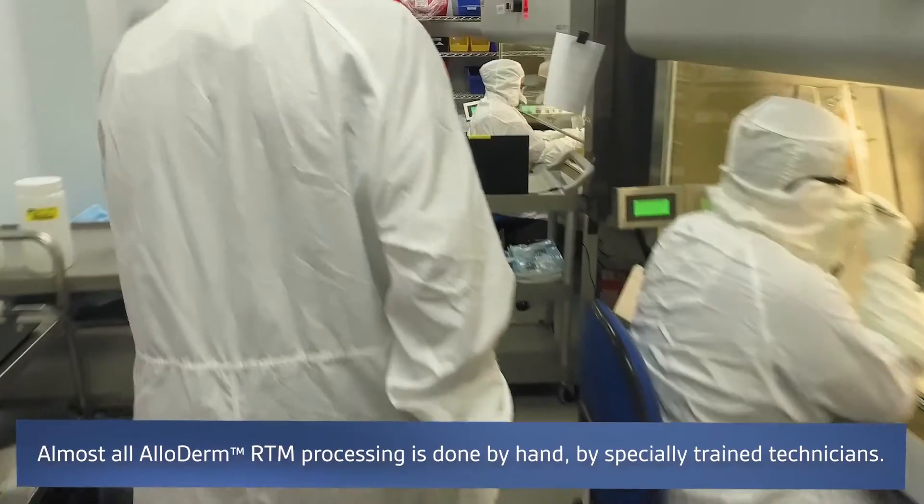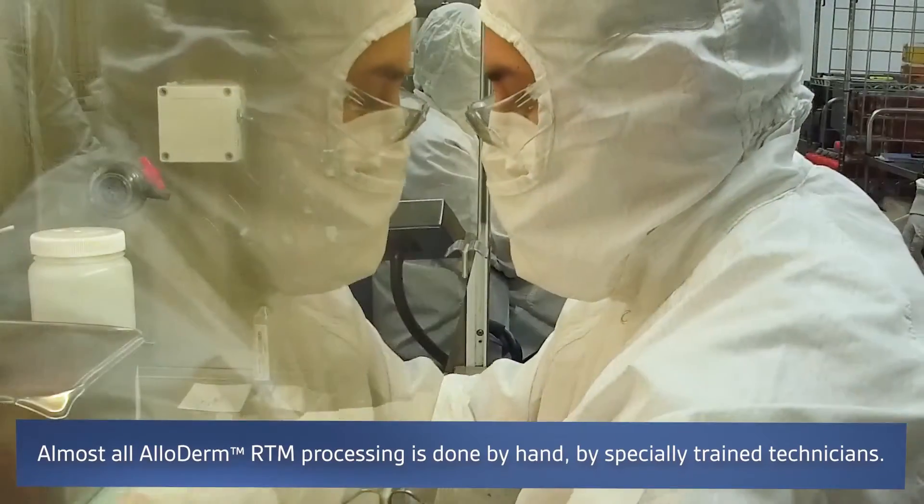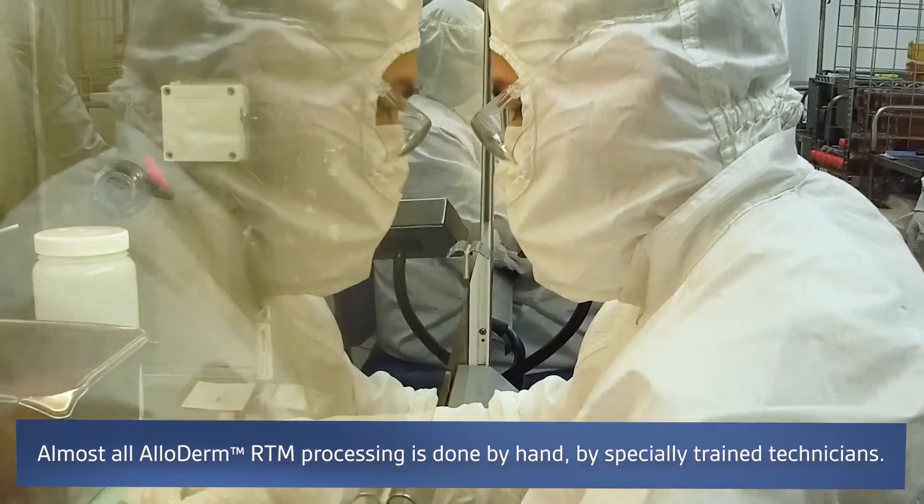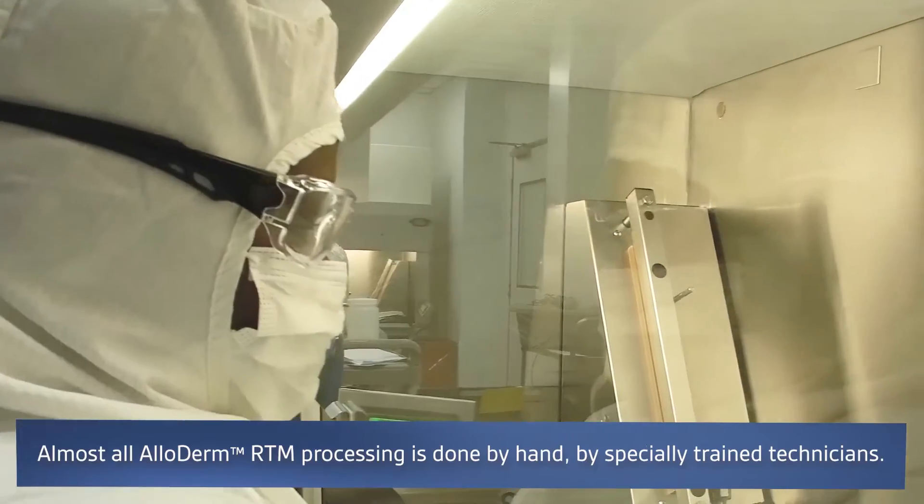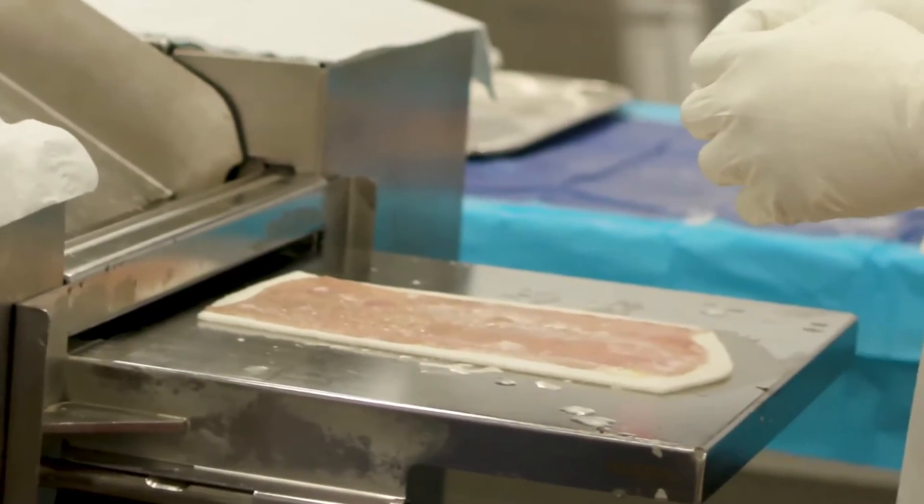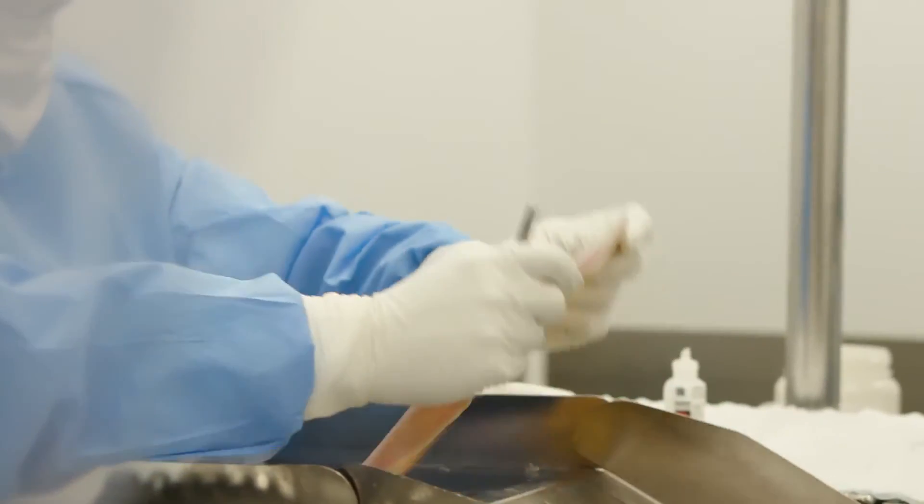The first step is to manually defat the tissue to prepare it for further processing. The dermis is then evaluated for defects such as moles, which are carefully cut out to maximize usable tissue. Different tissue thicknesses are created—Alloderm is available in five different thicknesses.